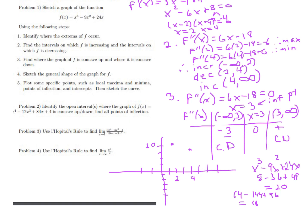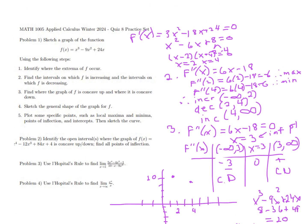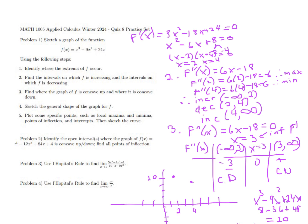We can find our y-intercept by setting all x's equal to zero in the original function. That gives us y = 0, and the x-intercept is also 0, so we get one point at the origin (0, 0).